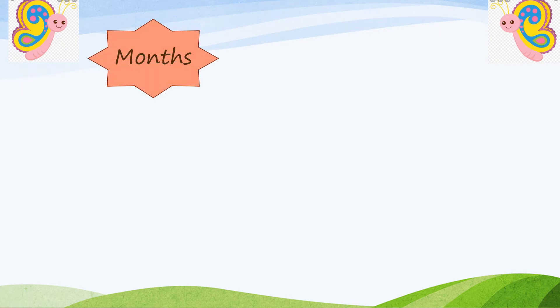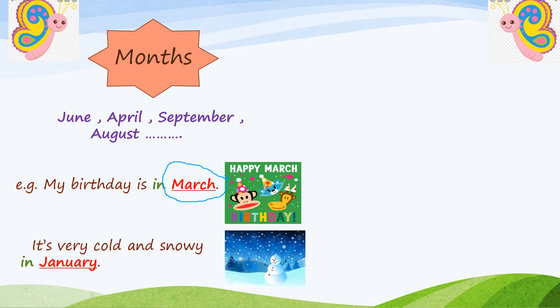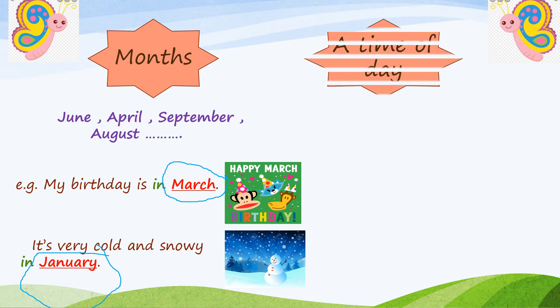So, if we have any months, we will put 'in' before it — such as June, April, September, August, and so on. For example, my birthday is in March. March is one of the months of the year, so we have to put 'in' before it. Second example: it's very cold and snowy in January. January is one of the months of the year, so we must put 'in' before it.